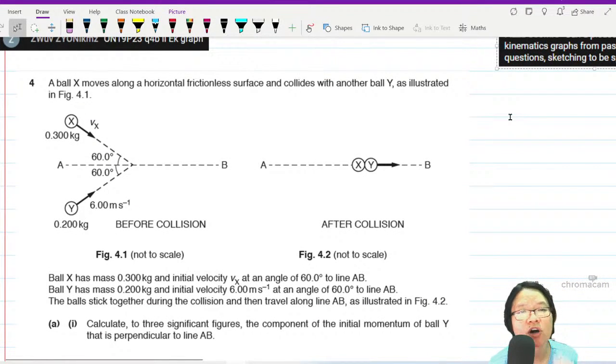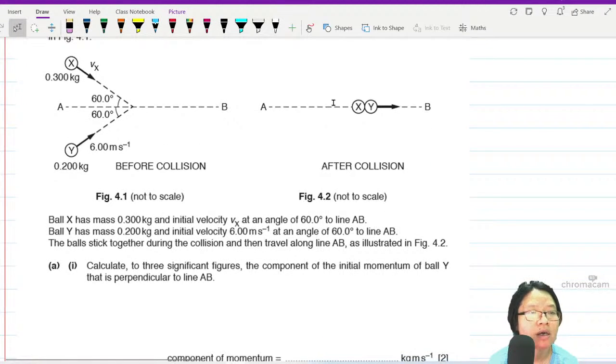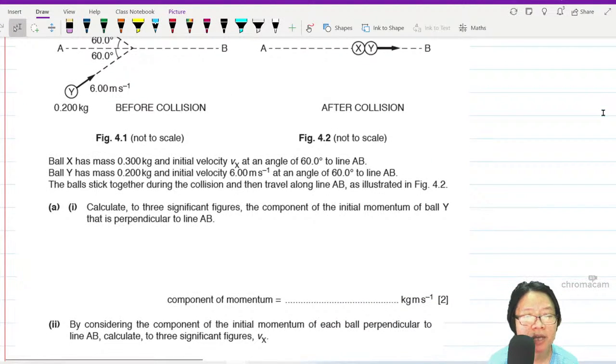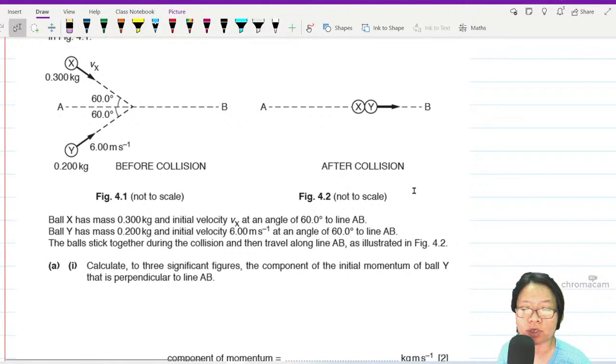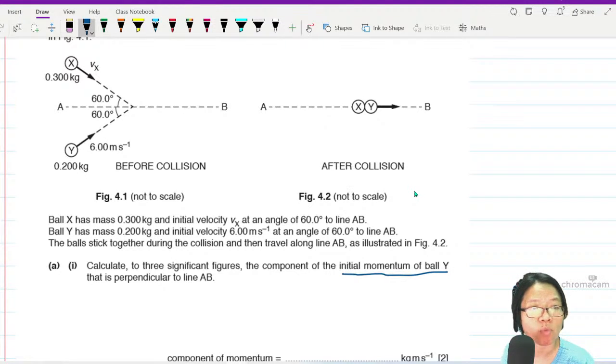So here there's a horizontal frictionless surface, they're going to collide and travel this way. You are given some properties and you're asked to calculate to three significant figures the component of the initial momentum of ball Y that is perpendicular to the line AB. Hence, resolution of vector.